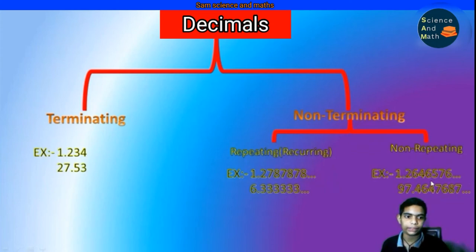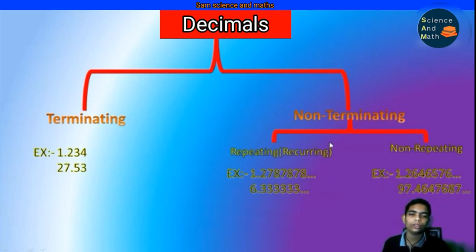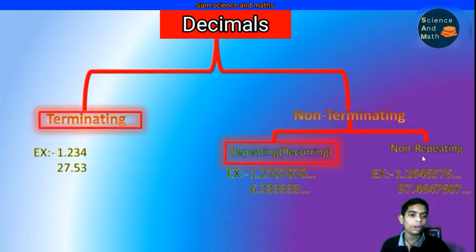In non-terminating non-repeating decimals, for example 1.2646576... and 97.4647687..., there is no pattern — no same set of numbers is repeating. Such decimals are known as non-terminating non-repeating decimals. To identify rational numbers: rational numbers must be terminating decimals or non-terminating recurring decimals. The non-terminating non-repeating decimals are irrational numbers.